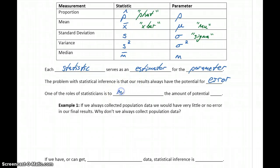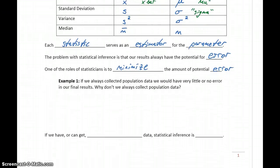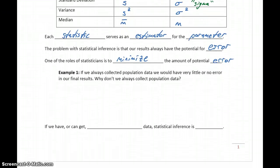One of the roles of statisticians is to minimize that possible error to help ensure that whatever results we come to, whatever conclusions we end up drawing, are based off the best possible information.